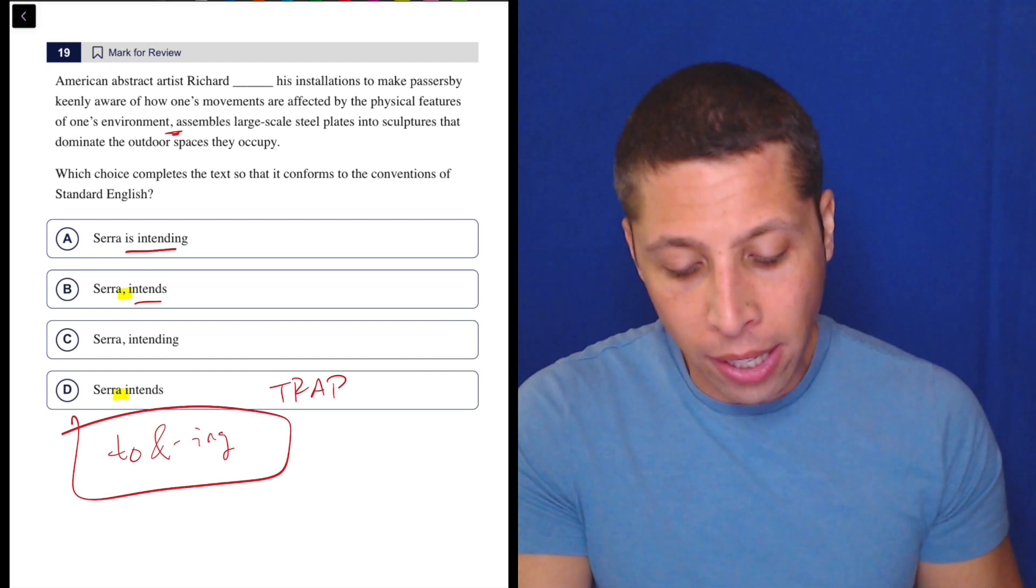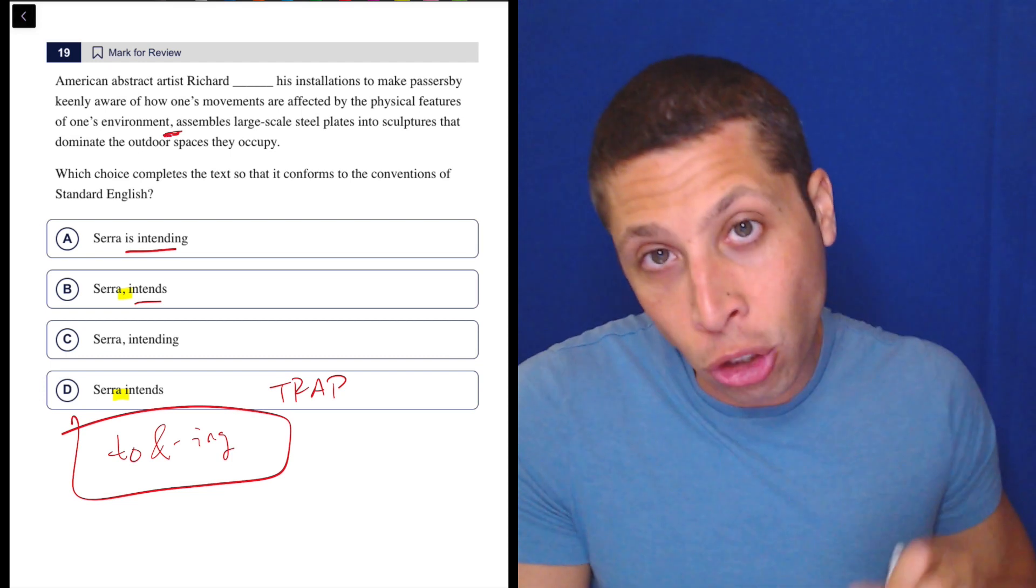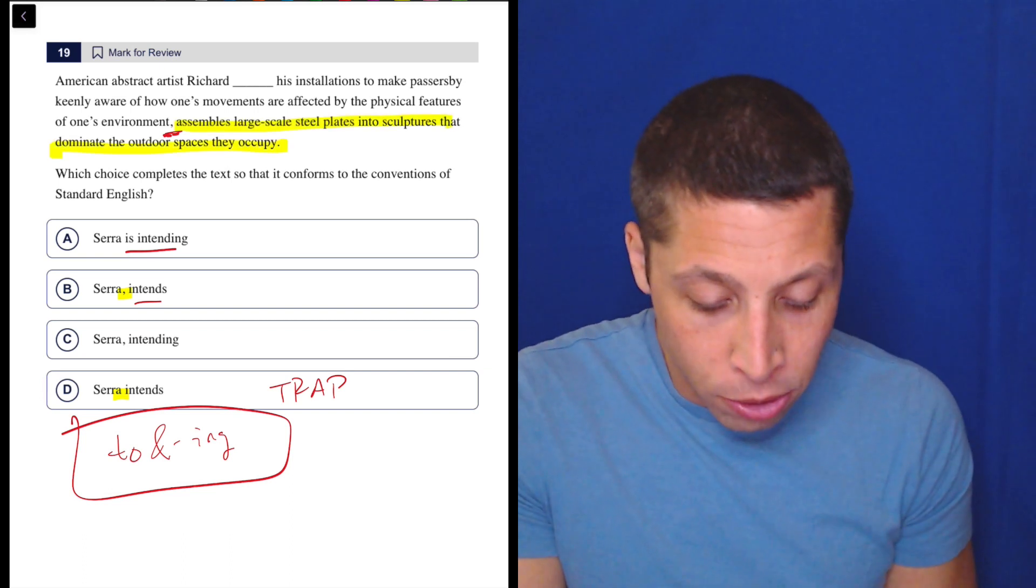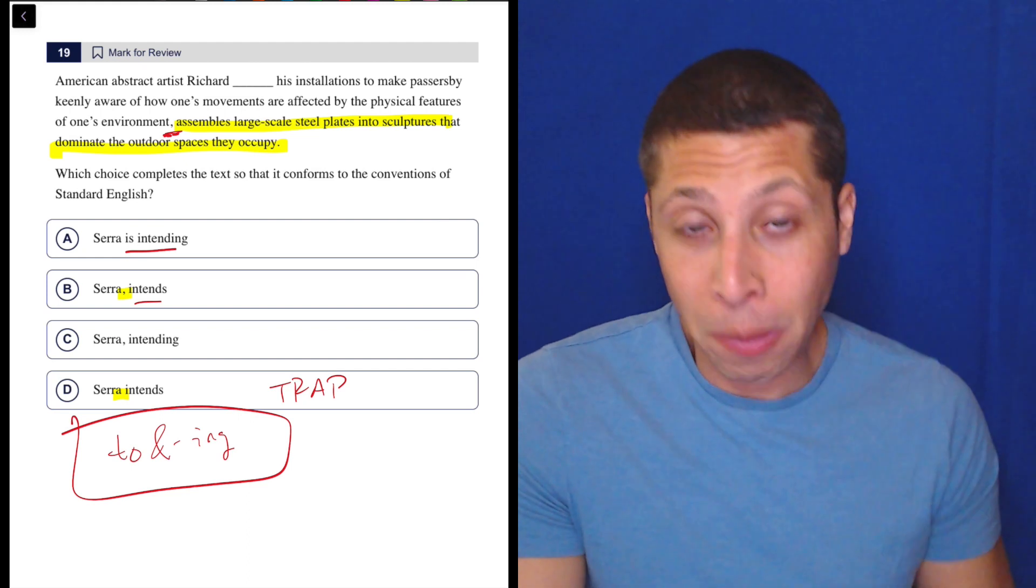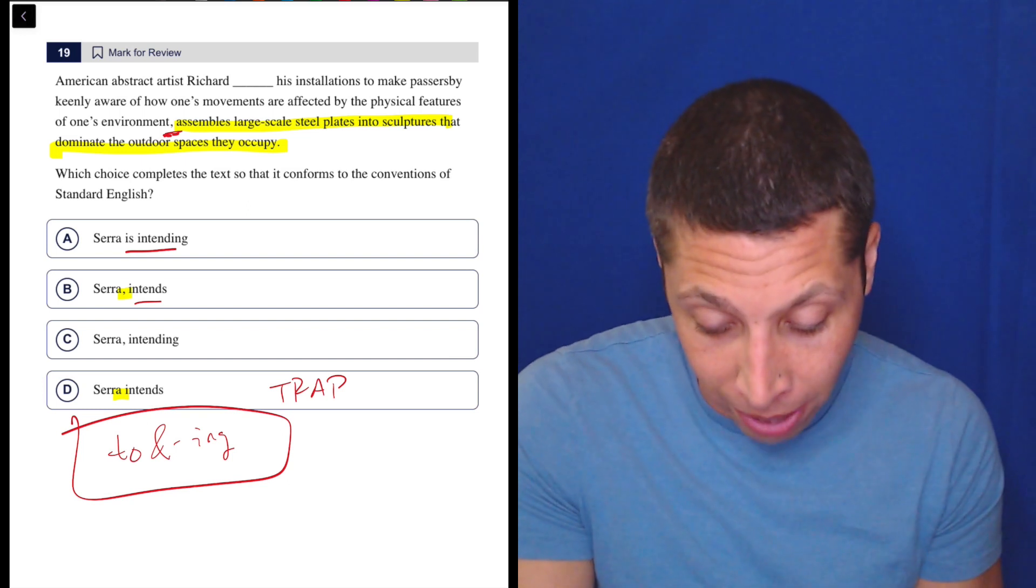What we need to do is recognize that this comment at the end is inserting an extra piece in our sentence. So our sentence is really picking up right here. That picks up with a verb, and the verb assembles is a verb in the normal present tense. And that's the verb that goes with Richard.